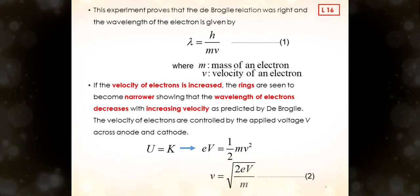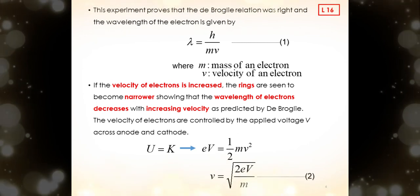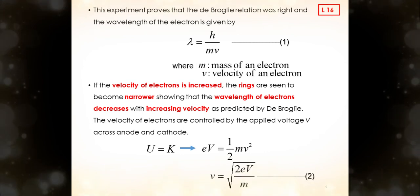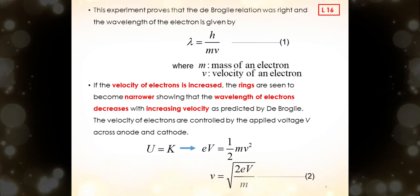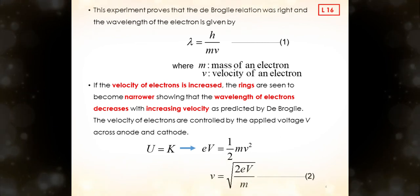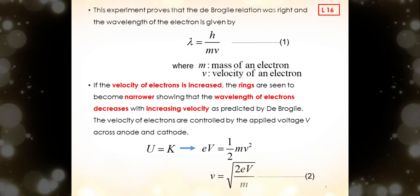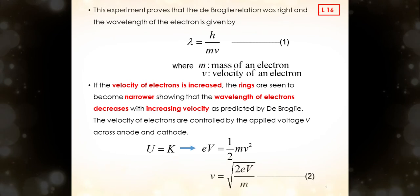If the velocity of electrons is increased, the rings are seen to become narrower, showing that the wavelength of electrons decreases with increasing velocity, as predicted by de Broglie. The velocity of electrons are controlled by the applied voltage V across anode and cathode. From equation U equals K, we substitute U equals e times V and the kinetic equation. Then we will get equation 2, that is the velocity v equals square root of 2 times e times V divided by m.